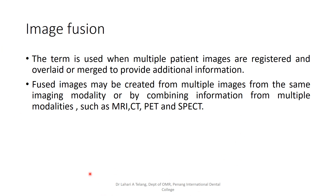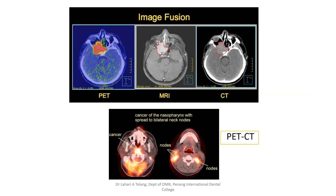To conclude, image fusion is the term used when multiple patient images are registered and overlaid or merged to provide additional information. Fused images may be created from multiple images of the same modality or by combining information from multiple modalities such as MRI, CT, PET, and SPECT. For example, this fusion image merges PET, MRI, and CT to get much more detailed information on the tumor, its spread, and extent. Another example shows a PET and CT fusion of the head and neck area indicating tumor involvement.